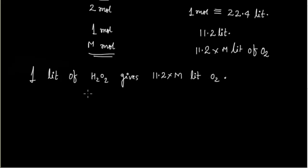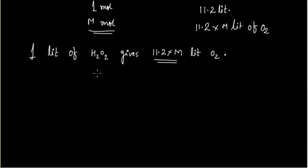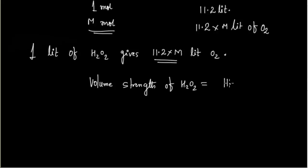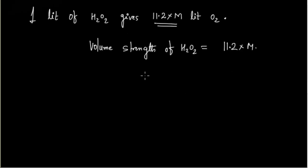This volume of O2 at STP produced from 1 liter of H2O2 is the same as the volume strength. Therefore, volume strength V = 11.2 × M.